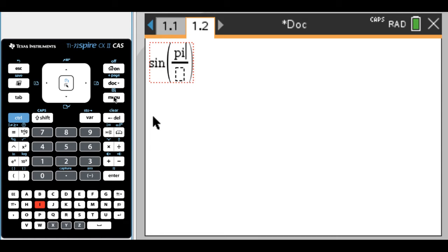I'm going to type pi over 9. And then I want to store this as something. So I'm going to hit Control and then the var key, and then I'm just going to store it as A. And I'll press Enter.